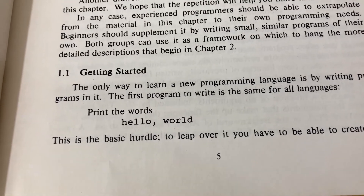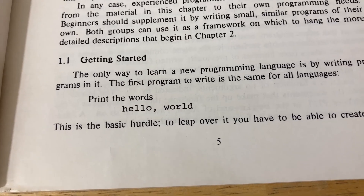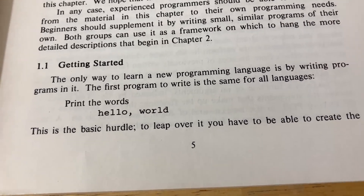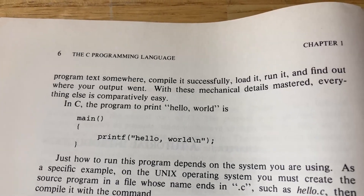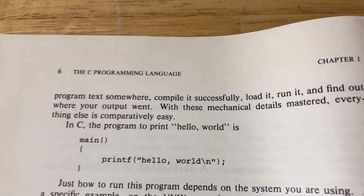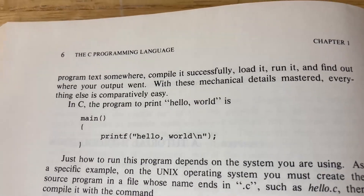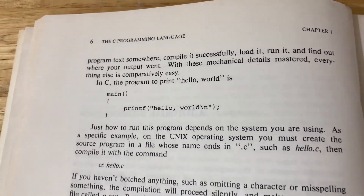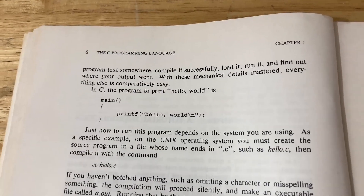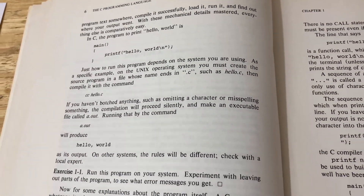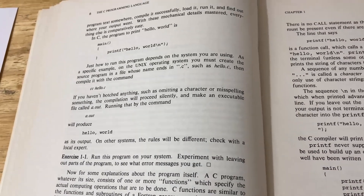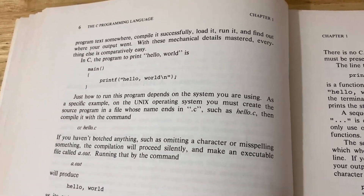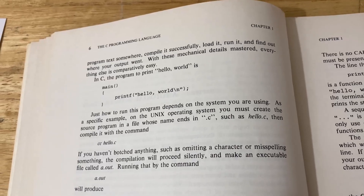Here it talks about the legendary Hello World program — print the words Hello World. This is the basic hurdle. To leap over it, you have to be able to create the program text somewhere, compile it successfully, load it, run it, and find out where your output went. With these mechanical details mastered, everything else is comparatively easy. That's a really motivating statement for people who are trying to learn C, because getting started and getting that first program working is a hurdle.